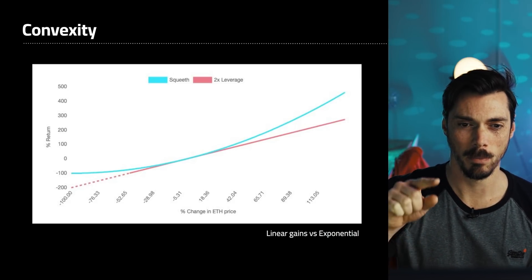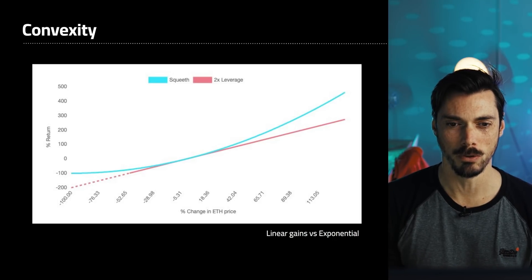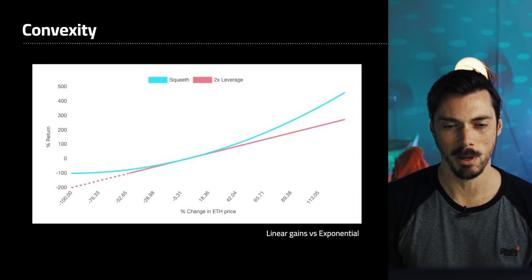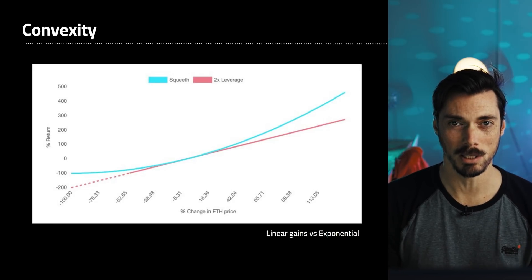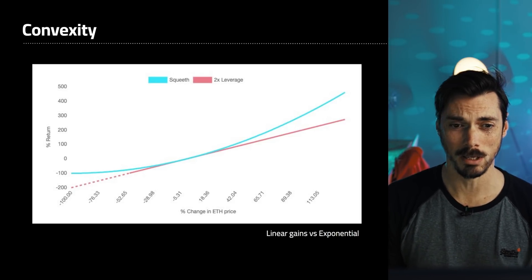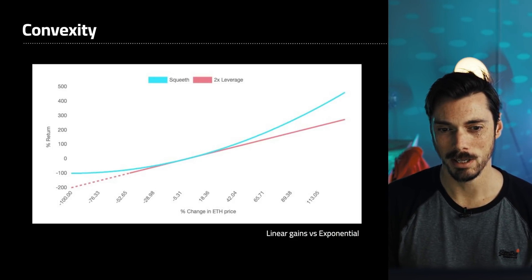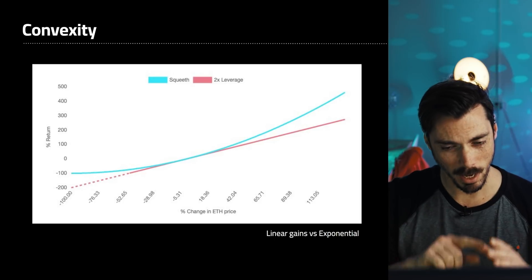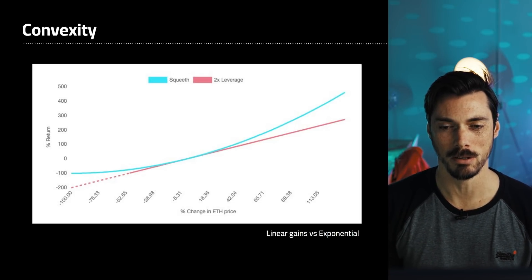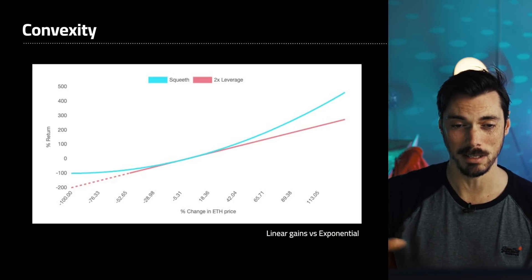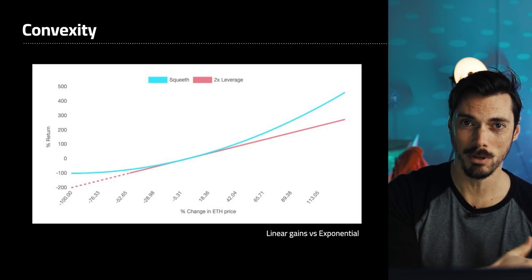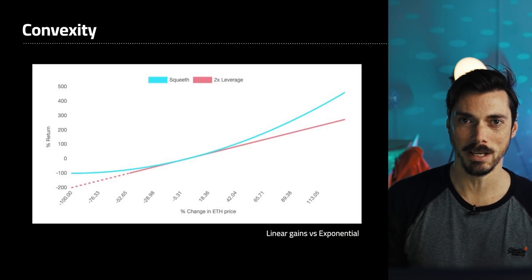This is a chart mapping the potential future gains of Squeeth versus a more traditional 2x leverage product. That red line is the 2x exposure. When you take out a 2x perpetual swap on BitMEX, you're borrowing to give you double exposure — as the underlying price goes up you double your gains, and as it goes down you double your losses. Squeeth doesn't work like that. It's not adding a multiple, it's adding a power instead — it's ETH squared. So as the underlying asset goes up, the amount you gain goes up by a power of the underlying, not a pure multiple. With 2x leverage it's a straight line — it's linear. But with Squeeth it's exponential: the more it goes up, the more you get, but also the more it goes down, the less you lose as that square reduces in power. So those are linear gains versus exponential gains.